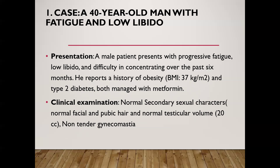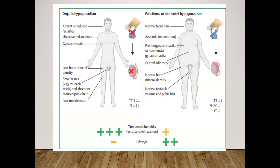On examination of his testes by orchidometer, testis size was around 20 cc, which is normal. He had non-tender gynecomastia on palpation. When looking at clinical features of organic versus functional or late-onset hypogonadism, there are key distinguishing points to consider.